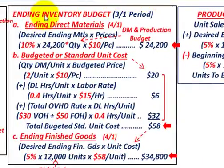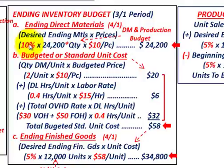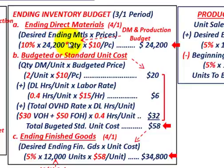Now let's calculate the ending inventory budget for the month of March. For ending direct materials, we take the desired ending materials quantity times the price. We want 10% of next period's needs. The total quantity of parts needed is 24,200, at $10 each. So 10% of 24,200 parts times $10 gives us an ending direct materials budget of $24,200.